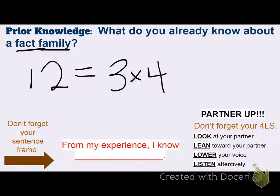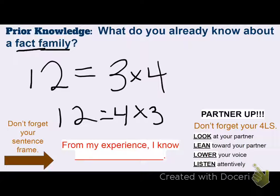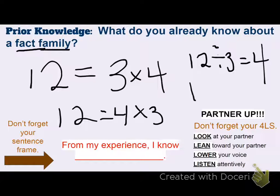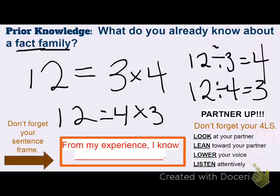Here's an example of what else I know about a fact family. I can say 4 times 3 is 12 — that commutative property, it doesn't matter the order. I can also see that division is part of this: 12 divided by 3, if I put 12 into 3 equal groups, I will get 4. I also know that if I take 12 and put them in groups of 4, there will be 3 in each of those groups. So a fact family are numbers that are all related, numbers that are connected.